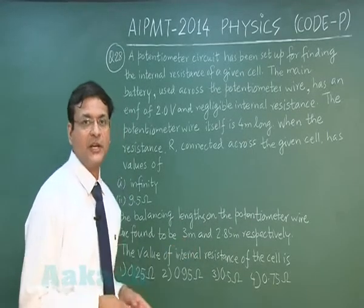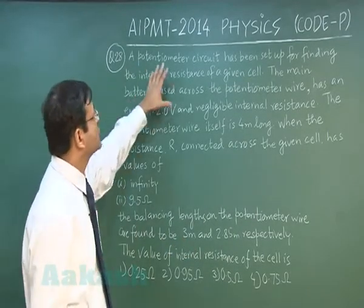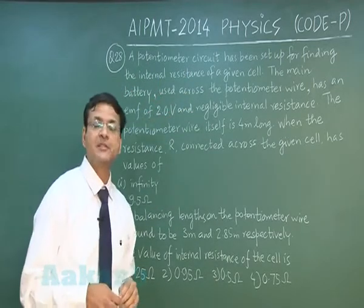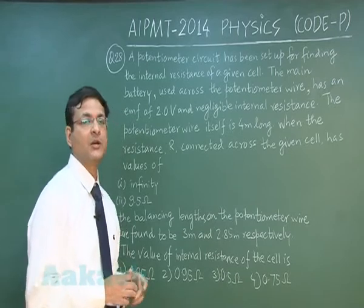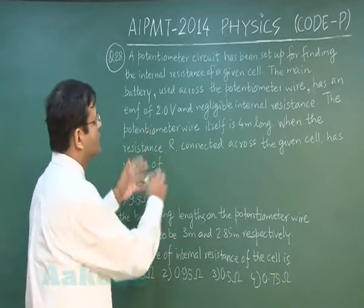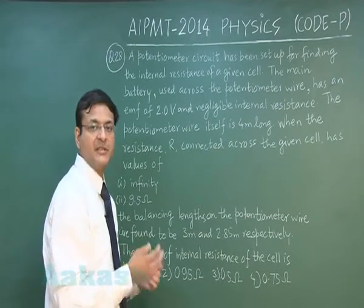Now in the next question, that is question 28, it reads: a potentiometer circuit has been set up for finding the internal resistance of a given cell. There is a very standard formula, and based on that this question has been asked. Too much unnecessary data has been given just to confuse you.